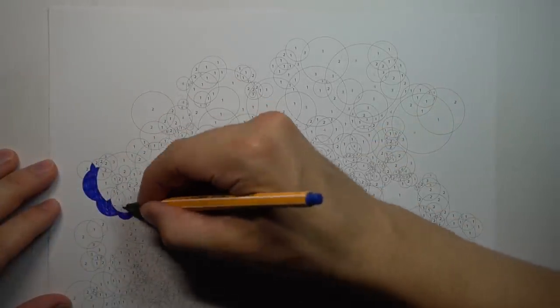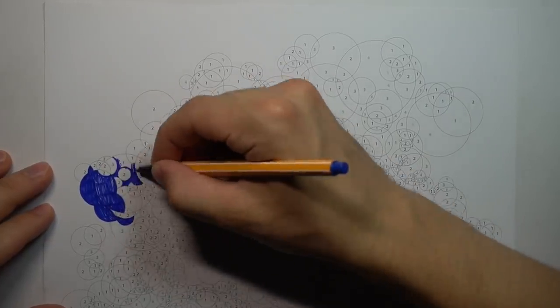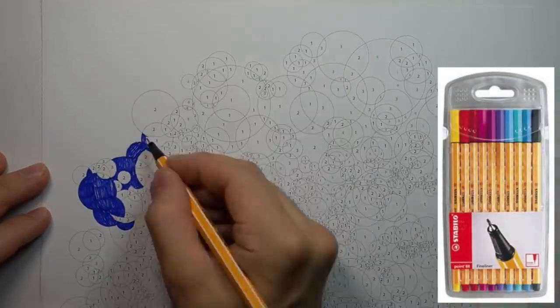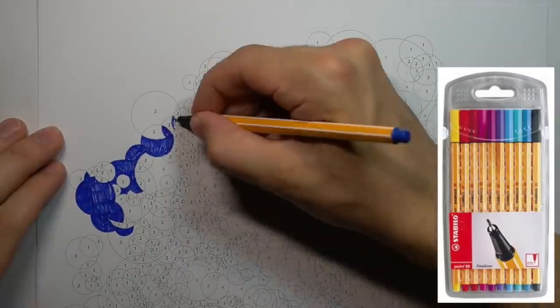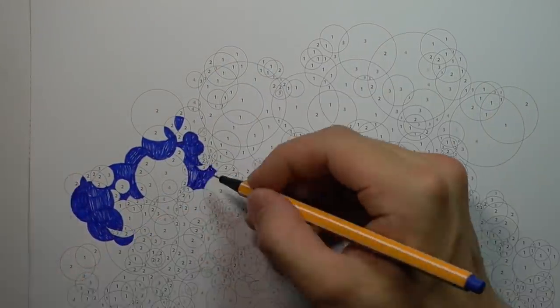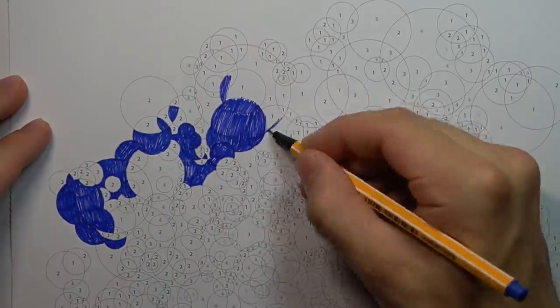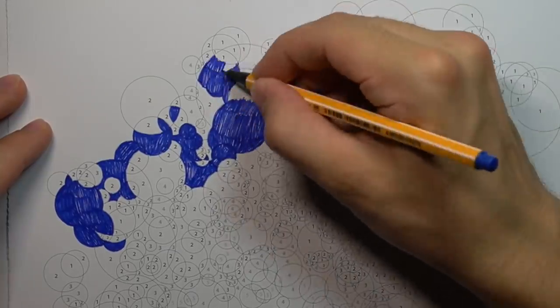There's tiny details. Big fluoro pens. Not gonna work. So instead, I've got these little Stabilo pens. Happens to be the same brand. Both fluoro. But with a much finer tip. Which will enable me to get into the small places and fill in that detail.